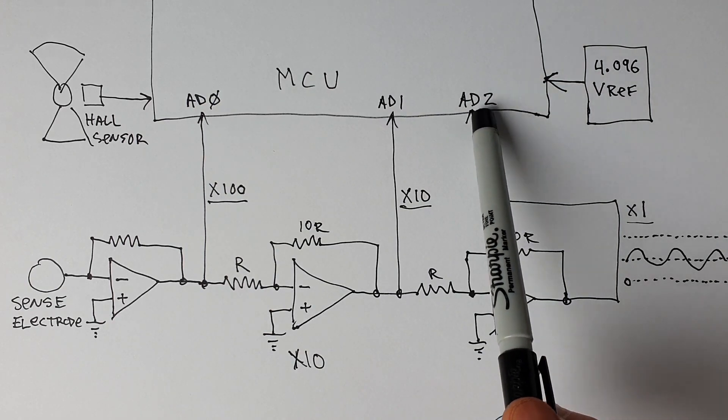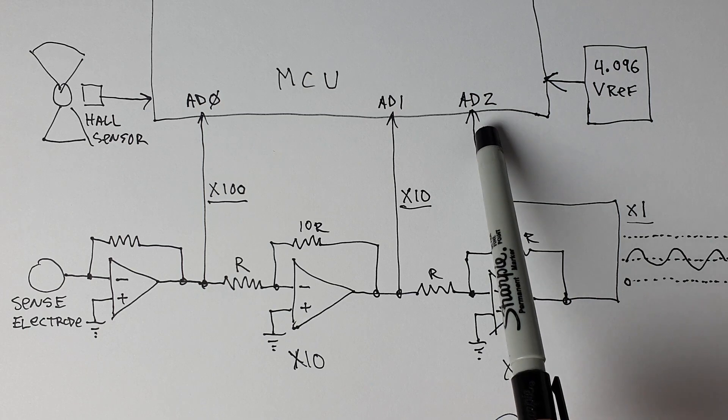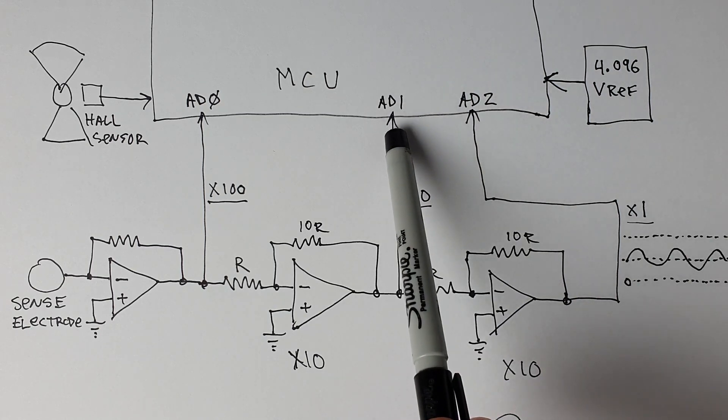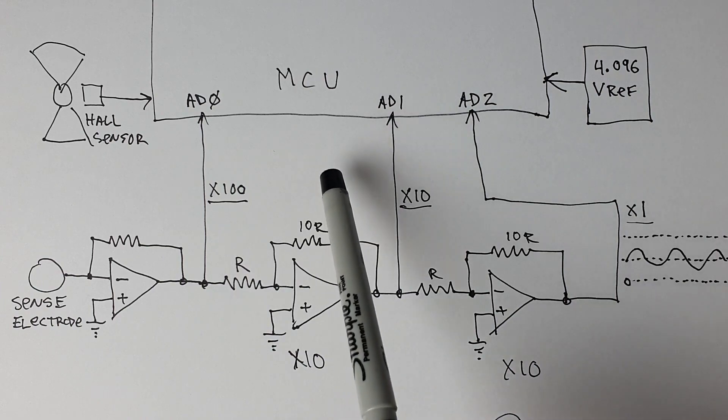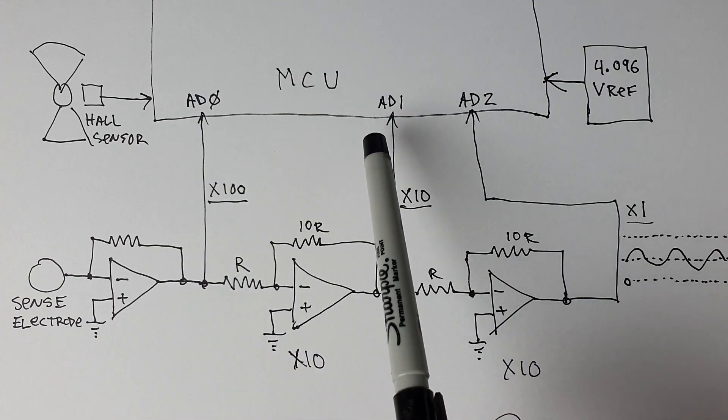Obviously, if an input is saturating, we need to bump down to the next lower range. And if a reading is too close to zero, we bump up to the next range.